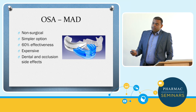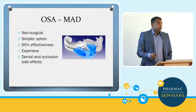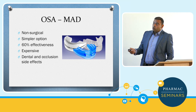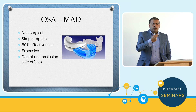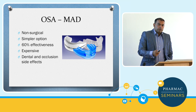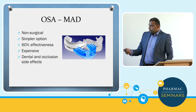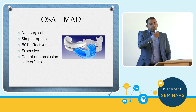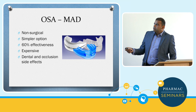Mandibular advancement devices — they're expensive, not covered by insurance here as compared to Australia, and not easily available in the public system. They show about 60-65% overall effectiveness. I give all my patients a cheap boil-and-bite splint that they can mold at home, and if they find it effective, they can consider a one-time investment in a custom-made one. Long-term use does have some occlusal side effects, but if someone's retrognathic, they might actually enjoy that benefit of occlusal change.